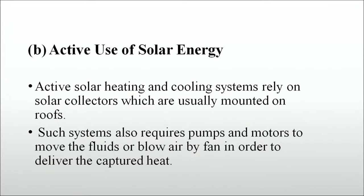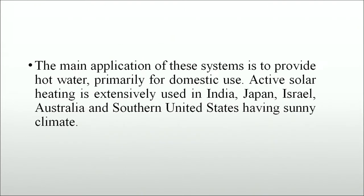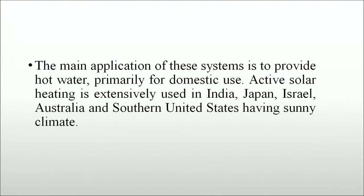Active solar heating and cooling systems rely on solar collectors usually mounted on roofs. Such systems also require pumps and motors to move fluids or blow air by fan to deliver the captured heat. The main application is to provide hot water primarily for domestic use. Active solar heating is extensively used in India, Japan, Israel, Australia and the southern United States, which have sunny climates.